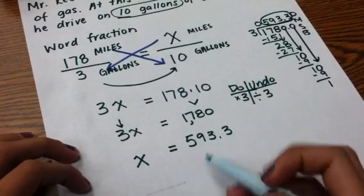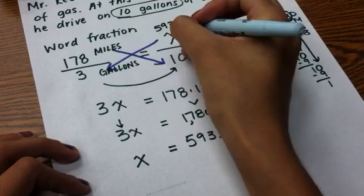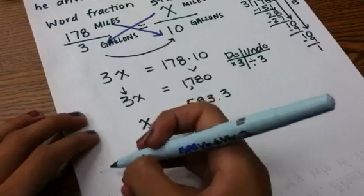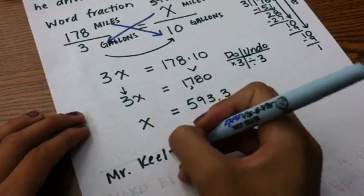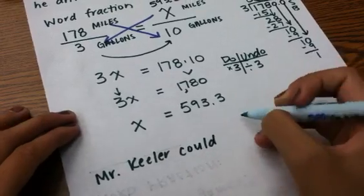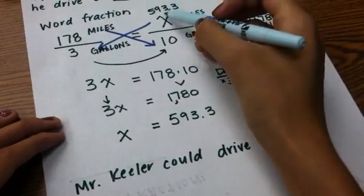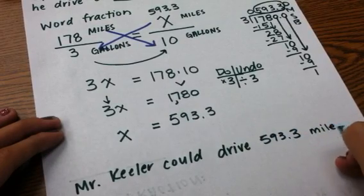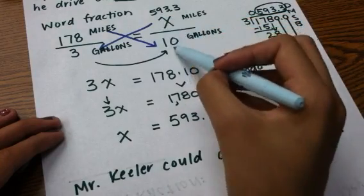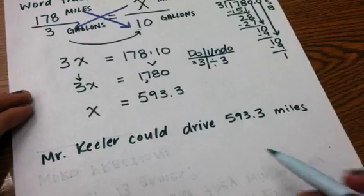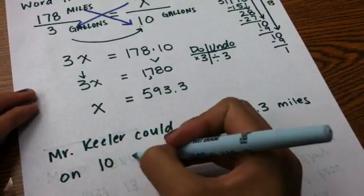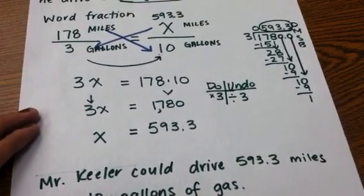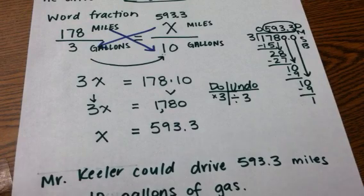If I was going to write a full sentence, remember that your value of x is now 593.3 miles. So, if I was going to write a full sentence, I would say Mr. Keeler could drive. Now, I found my value of x, 593.3 miles on. My proportion tells me that he's driving this far on this many gallons of gas. So, 593.3 miles on 10 gallons of gas. So, that's how you cross multiply to solve for the unknown variable in a proportion.